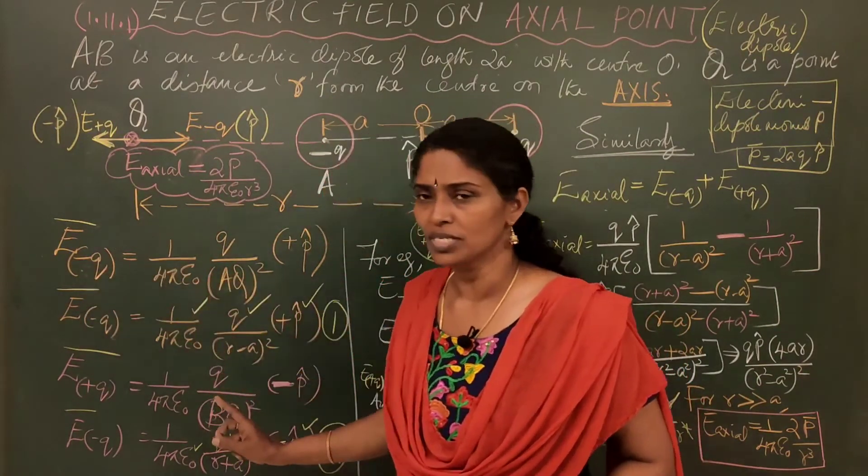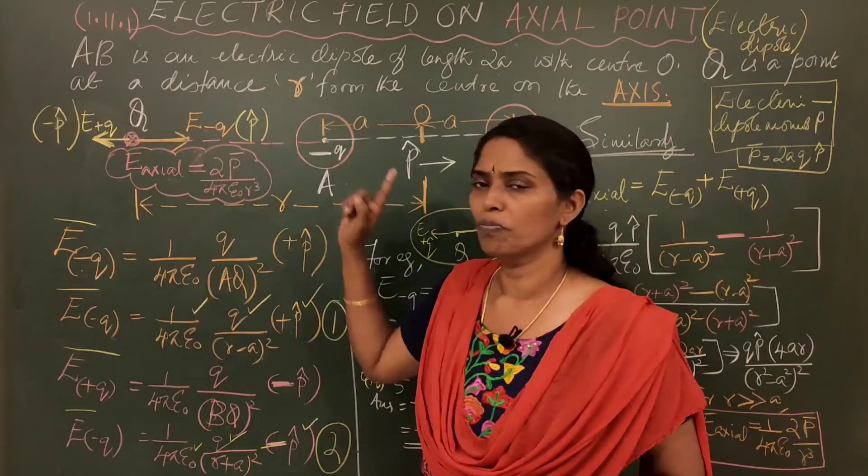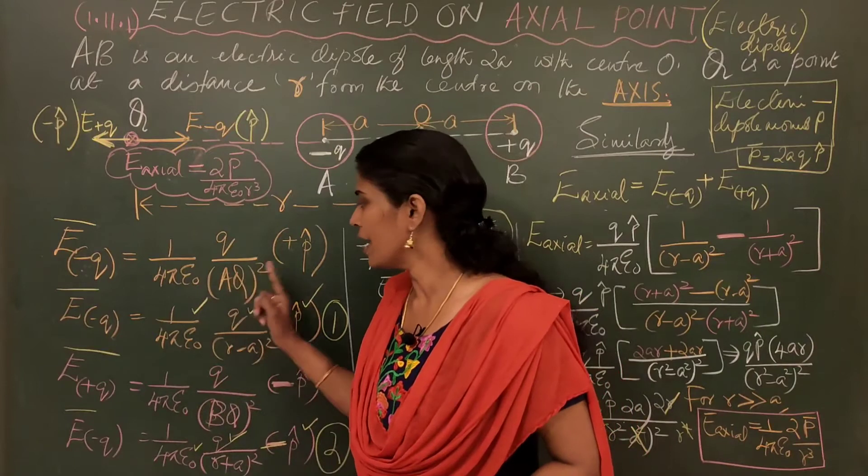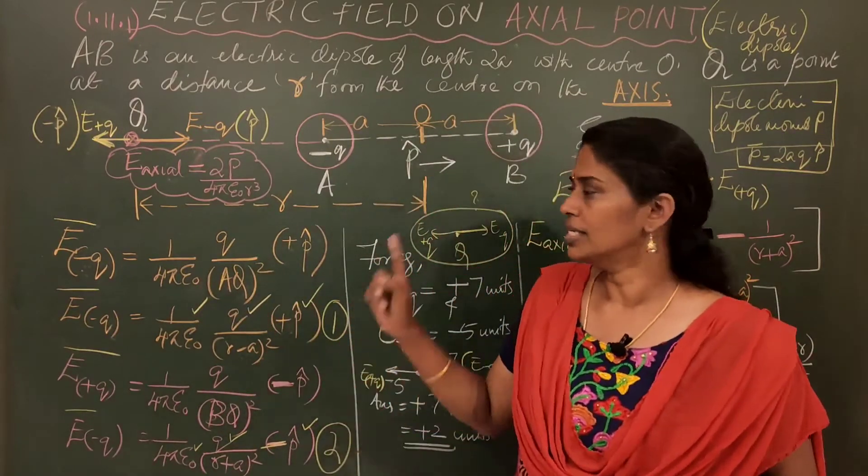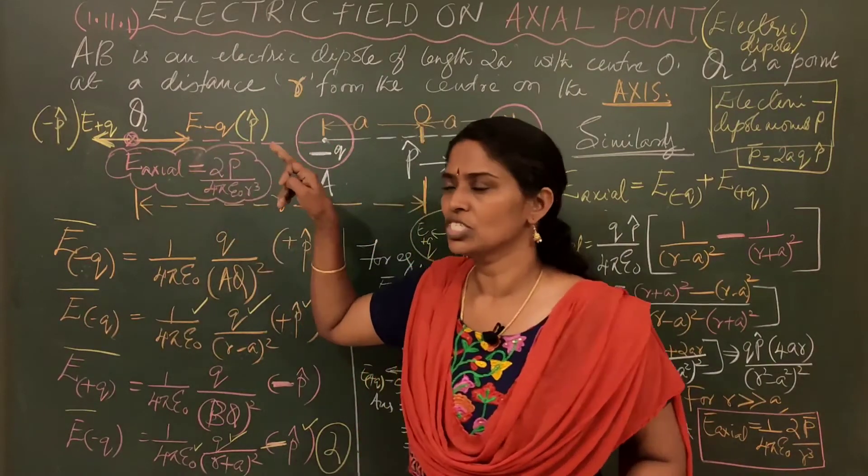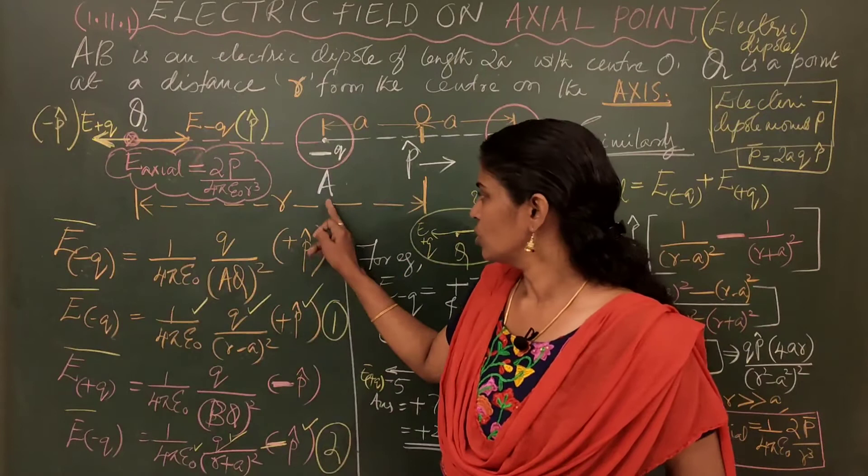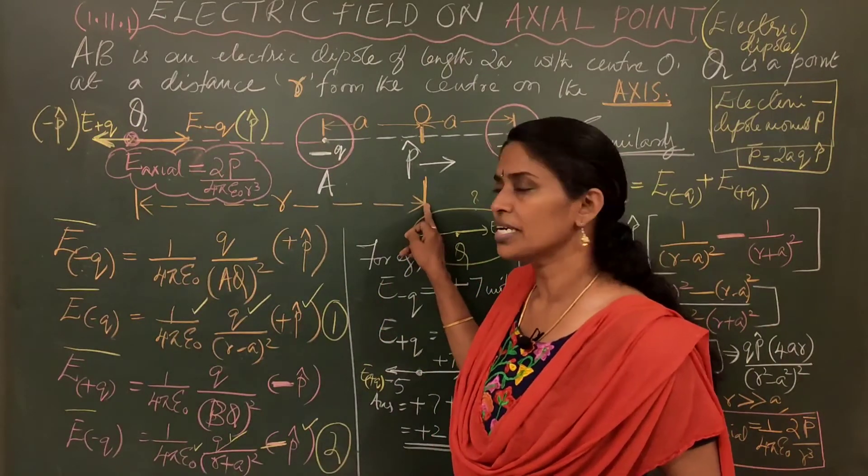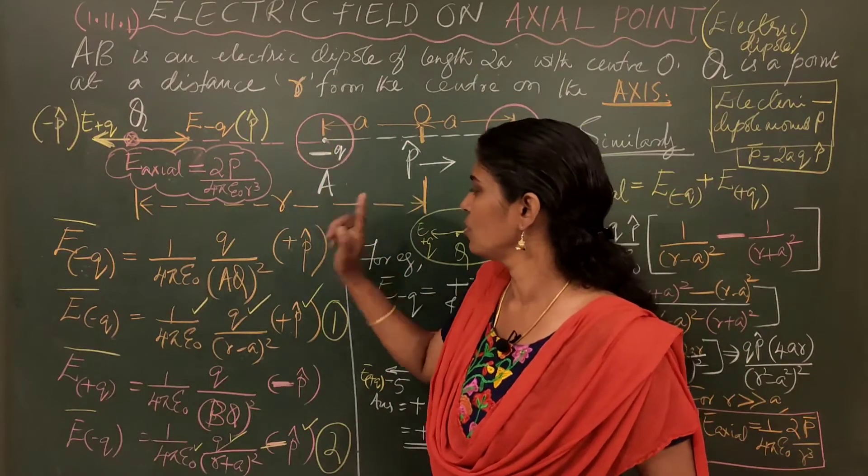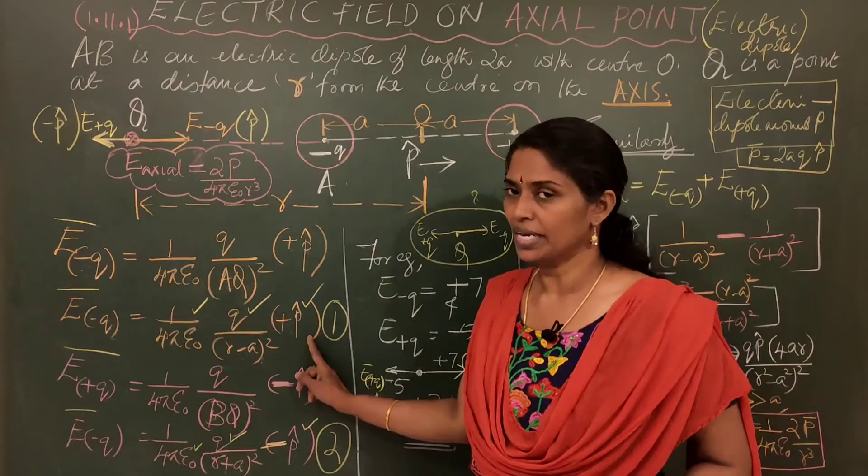The direction of E minus Q is towards right that is along P cap. So, the value is 1 by 4 pi epsilon 0 Q by R square. What is R? The distance between that particular A and Q that is the charge minus Q to the point Q. That is total distance from the center is this much is A. So, we can cut A. So, you will have R minus A the whole square along P cap.